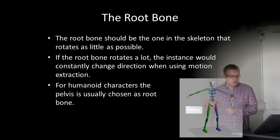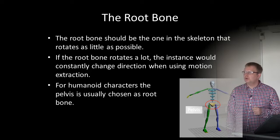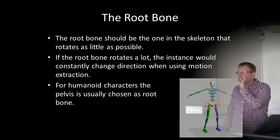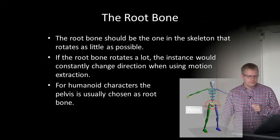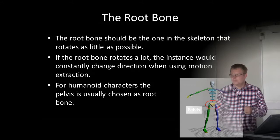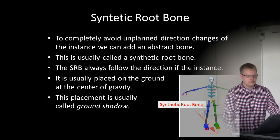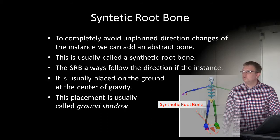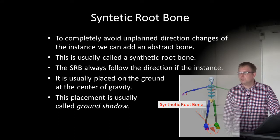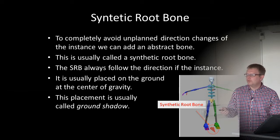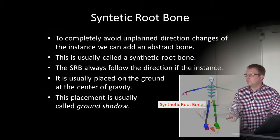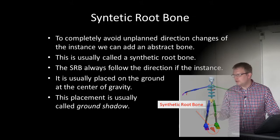Some final notes about the root bone. The root bone should be the one in the skeleton that rotates as little as possible, because if a root bone rotates a lot, the whole game object would constantly change direction when using motion extraction. For a human character, the pelvis is usually chosen as the root bone. We can also use a synthetic root bone — not a real bone in the skeleton — which completely avoids unplanned direction changes. The synthetic root bone always follows the direction of the game object instance and is usually placed on the ground at the center of gravity, between the feet of a humanoid character.